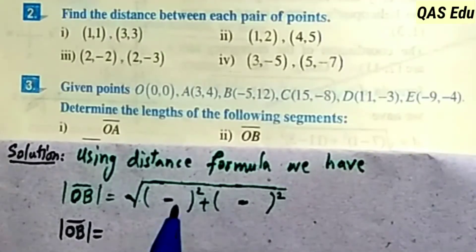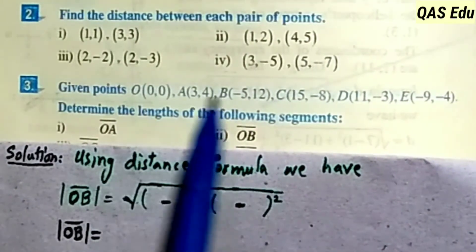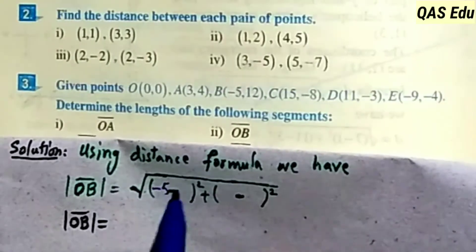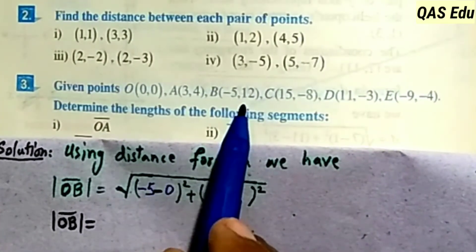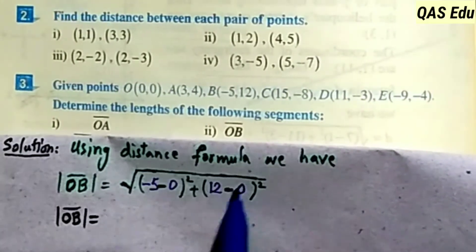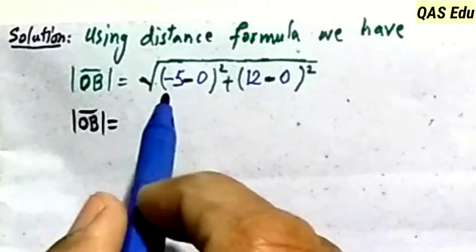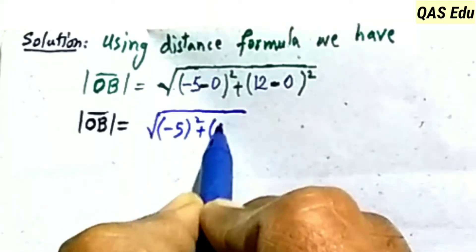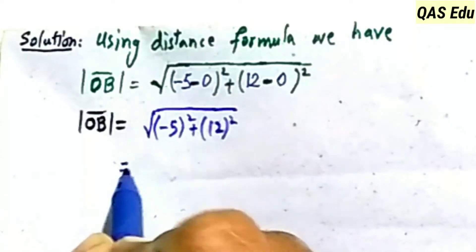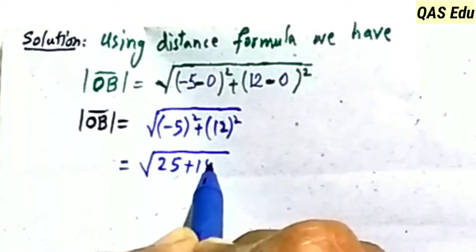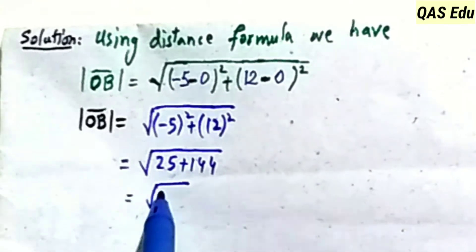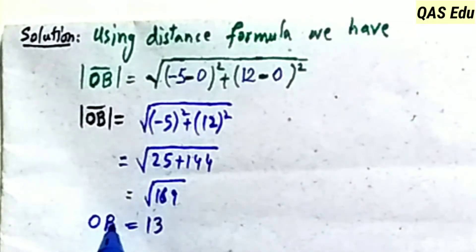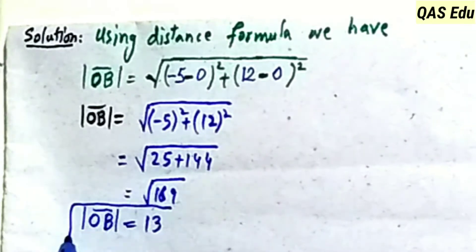Then OB: O is (0, 0) and B is (-5, 12). X coordinate: -5 minus 0 = -5. Y coordinate: 12 minus 0 = 12. OB = √((-5)² + 12²) = √(25 + 144) = √169 = 13. The OB line segment length is 13 units. Next, OC: O is (0, 0) and C is (15, -8). X coordinate: 15 minus 0 = 15. Y coordinate: -8 minus 0 = -8. OC = √(15² + (-8)²) = √(225 + 64) = √289 = 17 units.